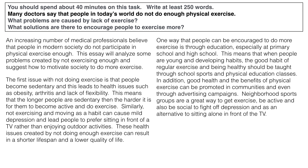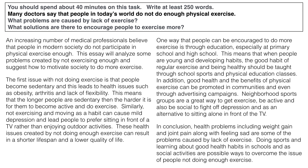The conclusion is going to be a summary. My advice: summarize the problems in one sentence and summarize the solutions in the other sentence. It's possible to put them all together in one sentence, but I recommend two for clarity and for word count. So: 'In conclusion, health problems including weight gain and joint pain, along with feeling sad, are some of the problems caused by lack of exercise.' That's our topic in there, very clear. Then: 'Doing sports and learning about good health habits in schools are possible ways to overcome the issue of people not doing enough exercise.' Don't be afraid to mention the topic throughout the essay, especially in the introduction and conclusion, and especially in topic sentences. Notice I don't say 'one way to overcome this or that or it' — paraphrase it, say it in a different way. Use that topic and do it.